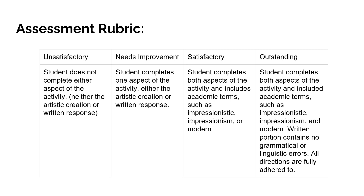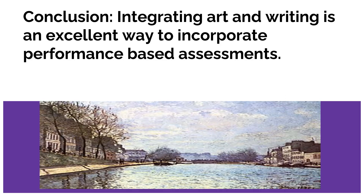This is how I would grade this activity. I have four levels: unsatisfactory, needs improvement, satisfactory, and outstanding. Satisfactory would require students to demonstrate mastery of both standards — using academic terms as required in the language standard and creating an artistic piece as required in the art standard. In conclusion, integrating art and writing is an excellent way to incorporate performance-based assessments into your classroom. Thank you.